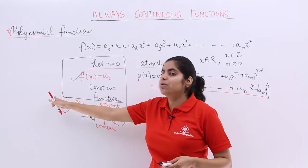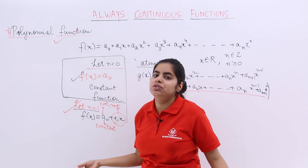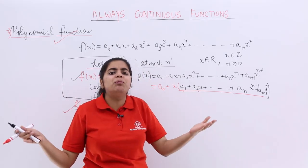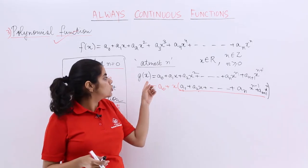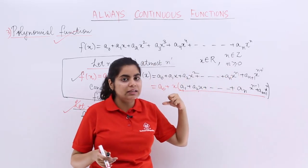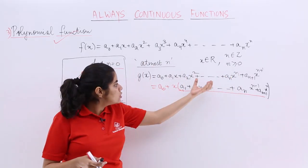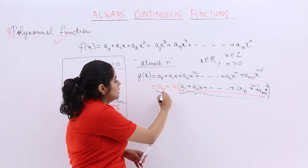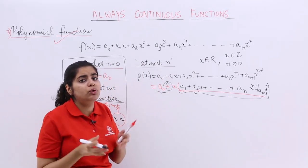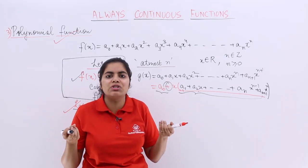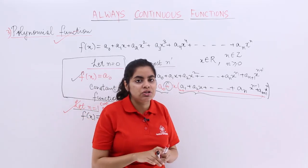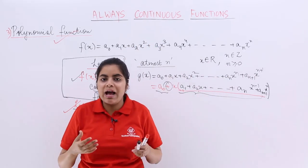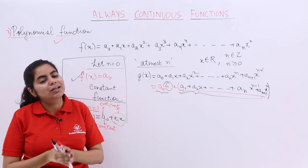It was continuous for n equal to 0, for n equal to 1, so we said that yes, polynomial function is continuous everywhere. Now, howsoever bigger the expression gets — if more terms are added — it will still be continuous. Because you can take out the variable x, and inside again it is a polynomial function. This being a polynomial is continuous, the a₀ being a constant is continuous, and the sum of two continuous functions is a continuous function — as we saw in algebraic operations of continuous functions. So my always continuous functions have one more addition: polynomial functions, which are also continuous everywhere.